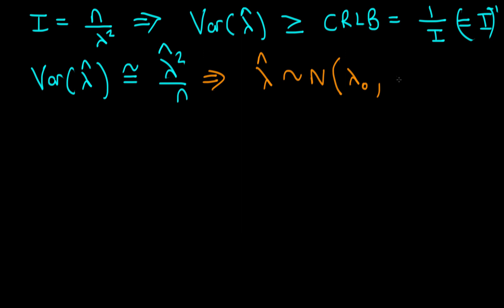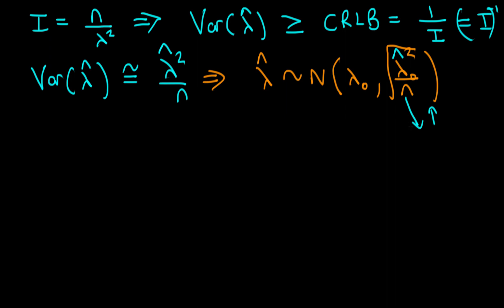Using the central limit theorem, the maximum likelihood estimator has a distribution that is approximately normal about the true value lambda-zero, with standard deviation equal to the square root of lambda-zero squared over n. In practice we substitute in our sample estimate of lambda, giving a sampling distribution we can use to quantify uncertainty in our estimate. As sample size n increases, our uncertainty in the true mean rate of beer orders declines.